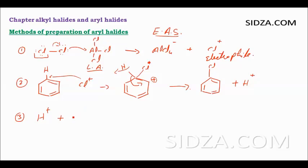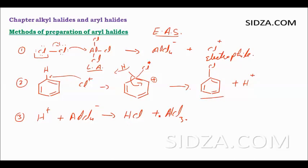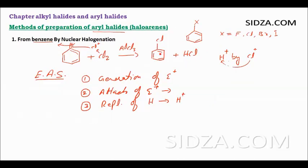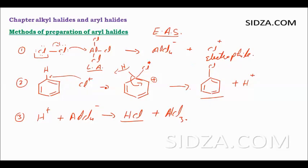In the third step, the H+ formed reacts with AlCl4-. Since AlCl3 is a catalyst, we regenerate it: AlCl4- reacts with H+ releasing Cl-, which combines with H+ to form HCl, and AlCl3 is recovered. So the products are chlorobenzene and HCl, with the catalyst AlCl3 regenerated.